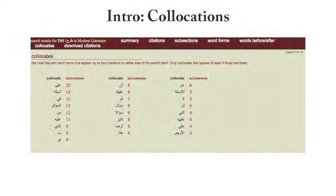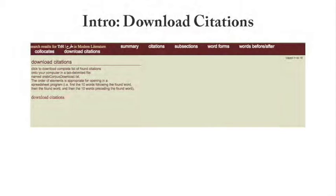Arabic has fairly free word order, so not all collocates are going to be right before and right after. Normally in corpus work, you set a range — within four words on the front and four words on the end. So I added that feature, allowing people to see within four words on each side what are the most common words that go with a given word. Again, ala and as'ila show up at the top for taraha. The tool also allows you to download all citations into an Excel file with one column for 10 words after, one for the word itself, and one for 10 words before, so you can sort and count outside the program.